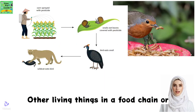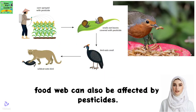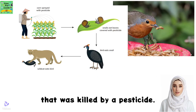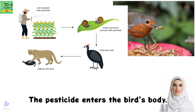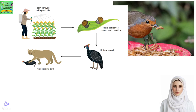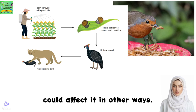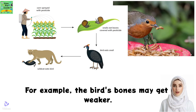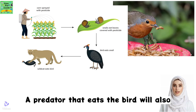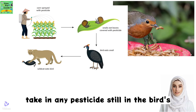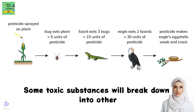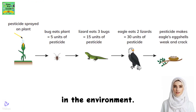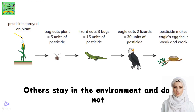Other living things in a food chain or food web can also be affected by pesticides. For example, a bird may eat a snail that was killed by a pesticide. The pesticide enters the bird's body. The bird may not die, but the pesticide could affect it in other ways — for example, the bird's bones may get weaker. A predator that eats the bird will also take in any pesticide still in the bird's body.